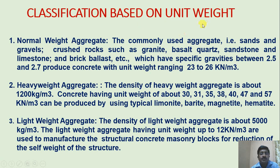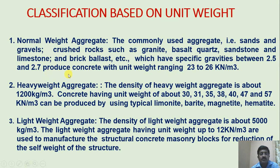Classification based on unit weight. First one is normal weight aggregate. The commonly used aggregates are sands and gravels, crushed rocks such as granite, basalt, quartz, sandstone, limestone, and brick ballast, which have specific gravities between 2.5 to 2.7 and produce concrete with unit weight ranging from 23 to 26 kN per meter cube.